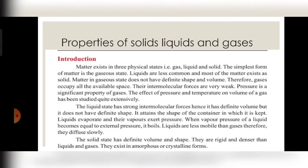Matter exists in three physical states: first gas, second liquid, and third solid. The heading is Gaseous State. The simplest form of matter is the gaseous state. Liquids are less common, and most matter exists as solid. Most elements in the periodic table are solid, and the rest are liquids or gases. The next heading is Properties of Gases — matter in the gaseous state does not have definite shape and volume.